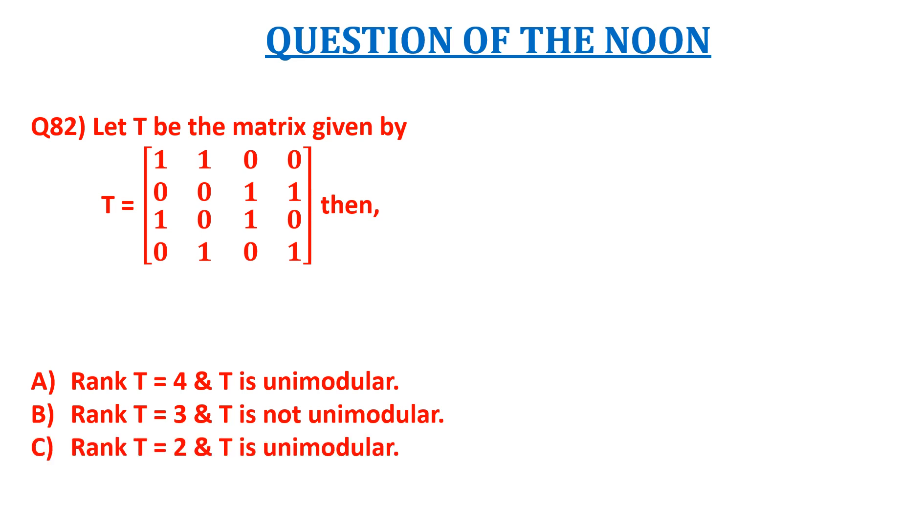C, rank of T is equal to 2 and T is unimodular; and D, rank of T is equal to 4 and T is not unimodular.